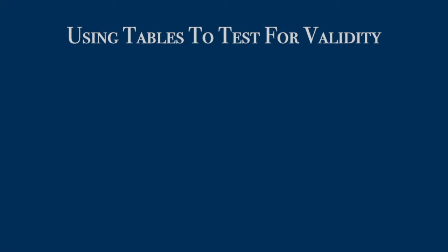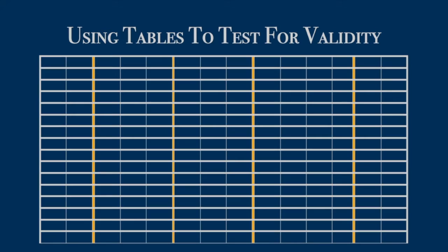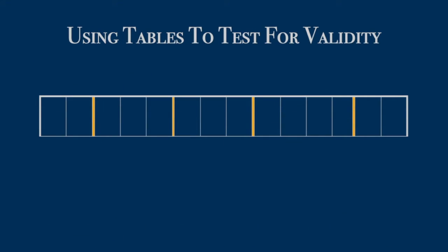In response to a viewer request, here's a quick video on partial tables. When you make a table to test for validity, you want this, not this; this, not this. In logic, sometimes it's good to be lazy.